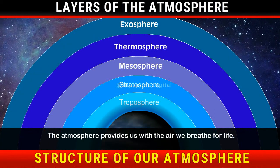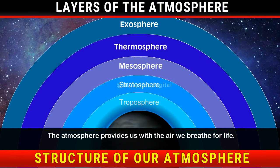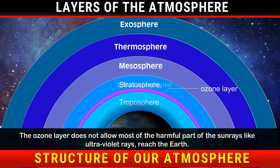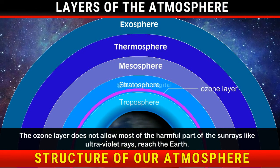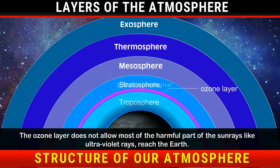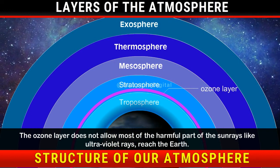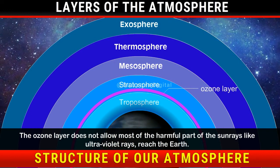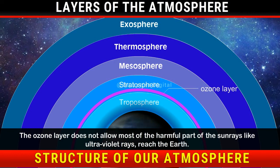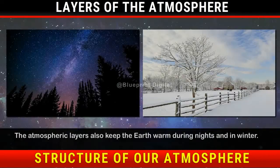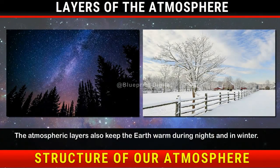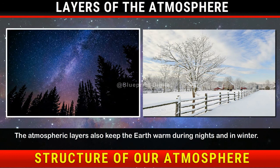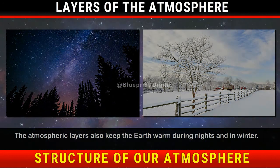The atmosphere provides us with the air we breathe for life. The ozone layer does not allow most of the harmful part of the sun's rays, like ultraviolet rays, to reach the earth. The atmospheric layers also keep the earth warm during nights and in winter.